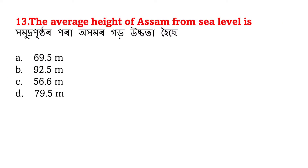The average height of Assam from sea level - homudra prishthar bhara ahamor ghar uchhata hoise. The answer is D - 79.5 meters. Homudra prishthar bhara ahamor ghar uchhata hoise 79.5 meter.